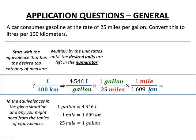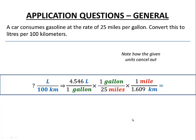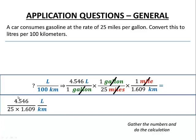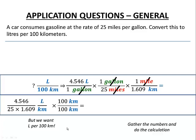Next I multiply by the unit ratio gallons per mile to eliminate gallons, then multiply by miles per kilometer to eliminate miles and convert to kilometers. Dimensional analysis shows gallons disappear, miles disappear, leaving liters per kilometer. Gathering the numbers: 4.546 in the numerator, 25 times 1.609 in the denominator. But we want liters per 100 kilometers, not just liters per kilometer. We multiply by 100 km / 100 km — effectively multiplying by one — so we change nothing mathematically, but now the denominator becomes 100 kilometers.